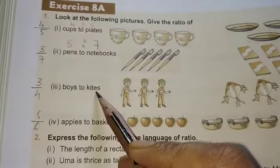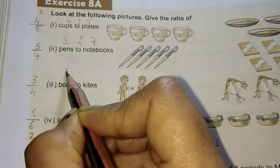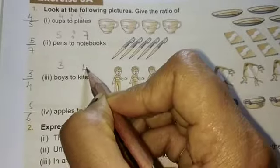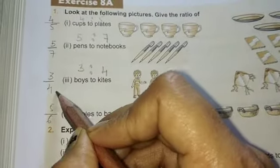Now boys to kites, so first we will count the boys, one, two, three, there are three boys and one, two, three, four, that is four kite. So ratio is three is to four or we can write three by four.